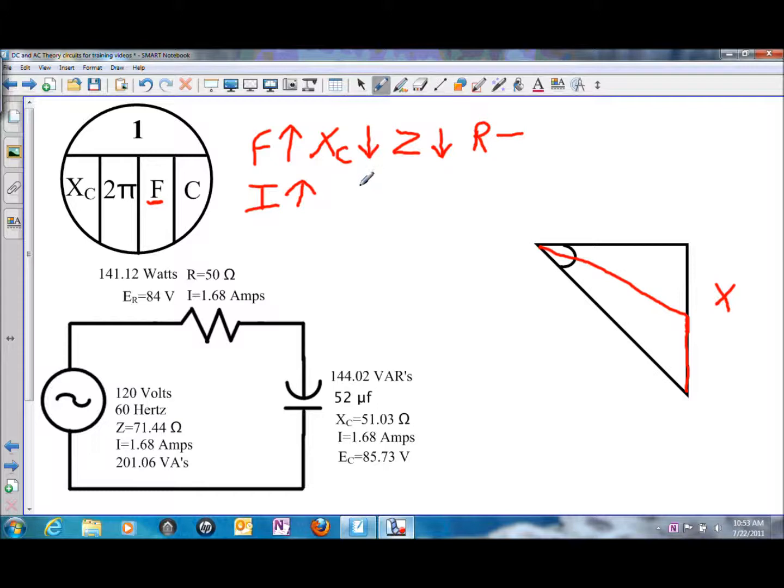Now, the other relationships to take a look at are power factor and angle theta. Once again, those two are also an inverse relationship. So looking at the new triangle, we have changed angle theta. Angle theta has gone down, which means that our power factor has increased, has become better.